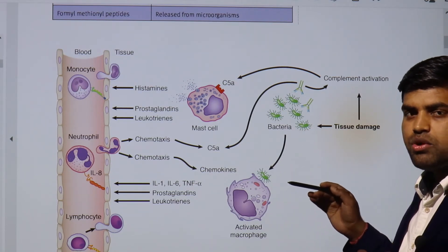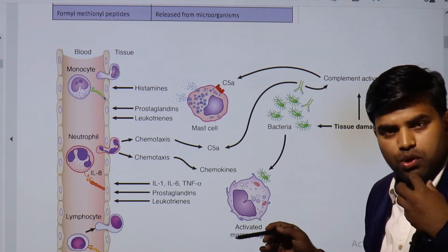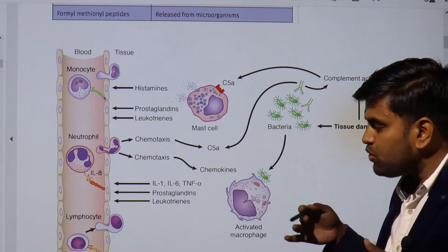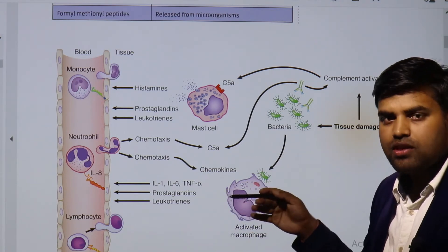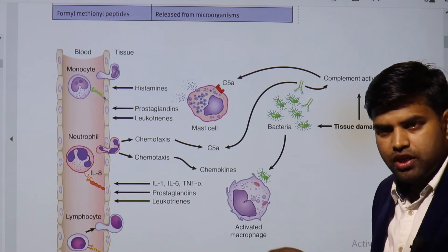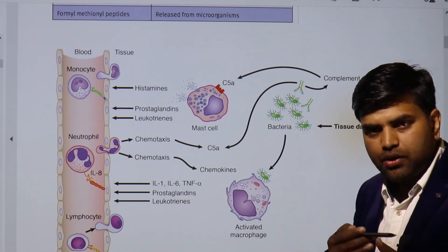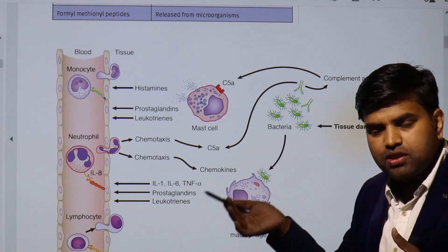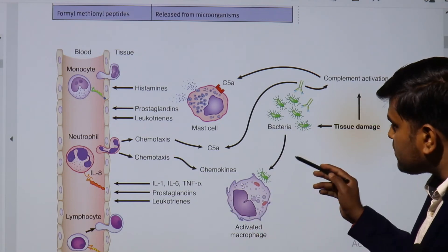If macrophages are not able to kill the organism, they act as antigen-presenting cells and go to the adaptive immune system. They present the antigen to T cells in the local lymph node, saying: first we could not prevent the organism from entering, then we tried to kill it through inflammation with neutrophils and macrophages — please help. T cells are activated, B cells are activated, and antibodies form in large amounts.